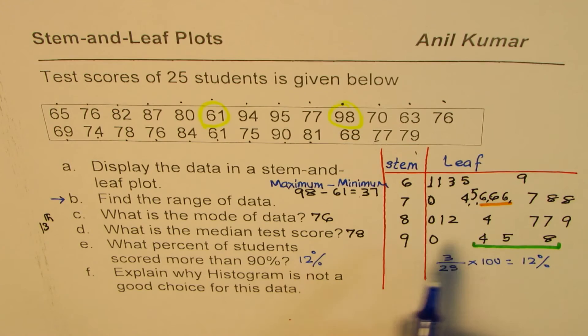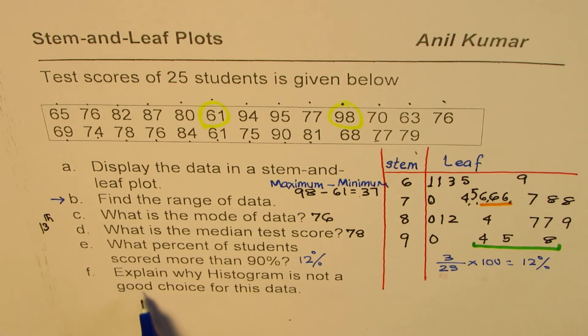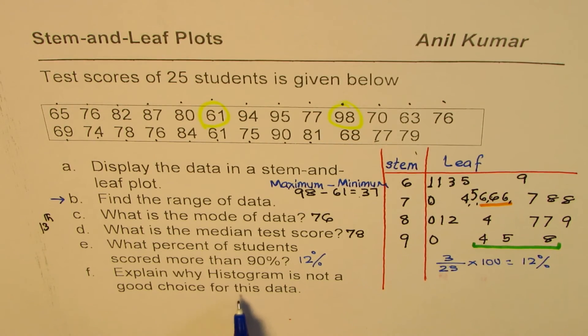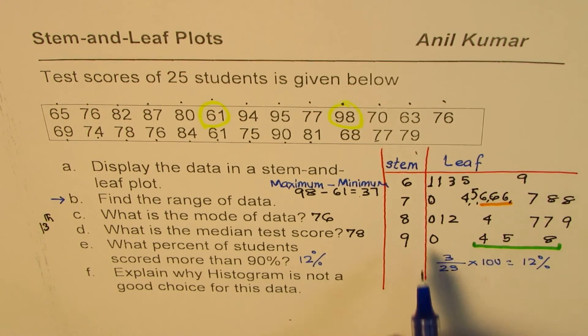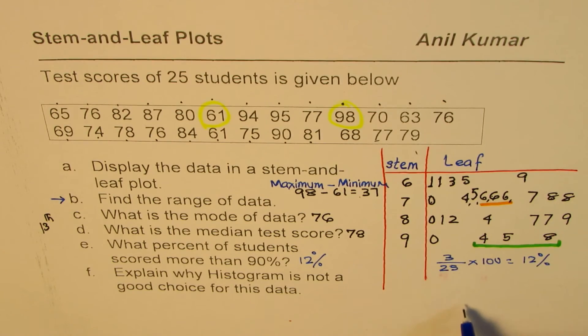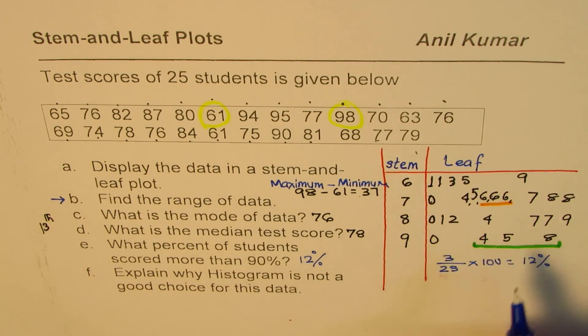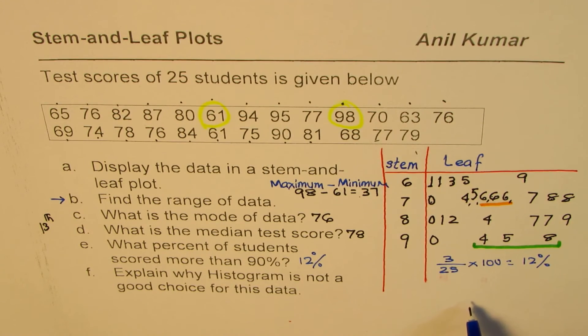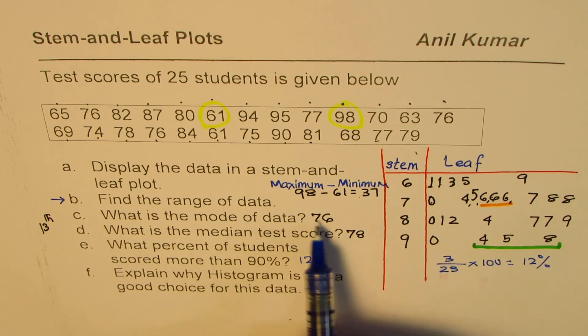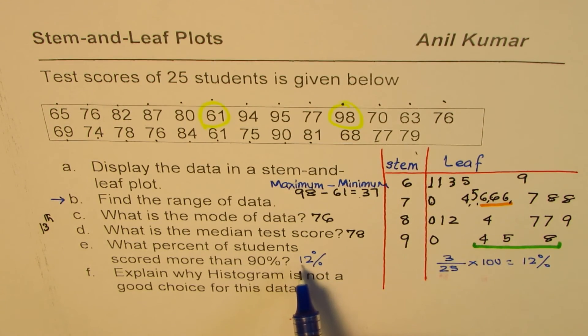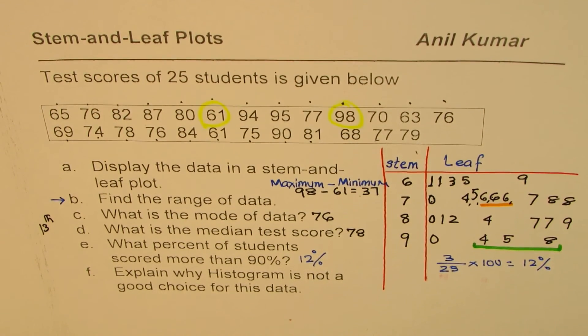You see how easily we could find all this information from the stem-and-leaf plot. Now the question is, explain why histogram is not a good choice for this data. Well, if you create a histogram you'll get bars connected, but you lose the vital information of what the numbers are. So you cannot answer any of these questions with the help of a histogram.